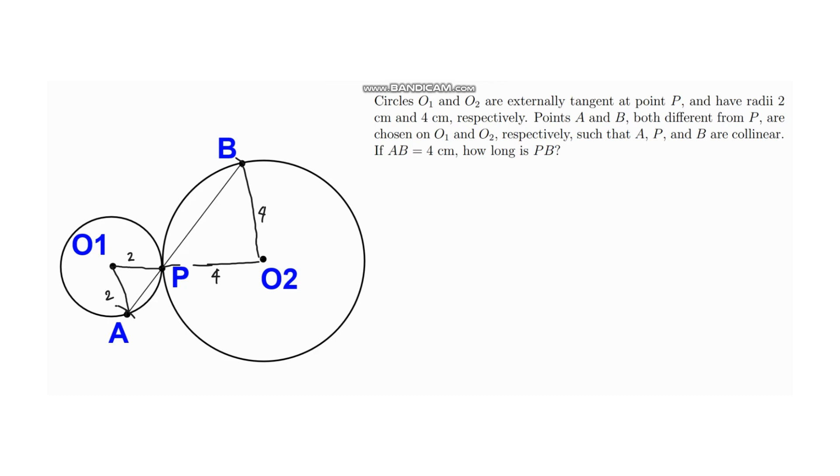So if we label this as X, this AP, then definitely PB would be 4 minus X. Okay. So we are to solve for the length PB, so we are to solve for 4 minus X.